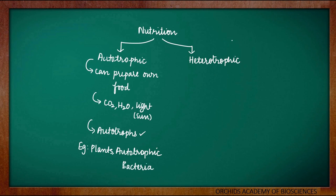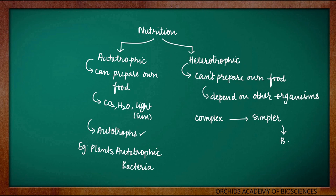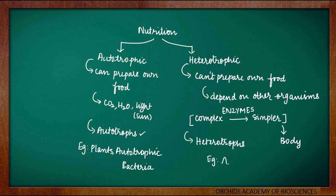What about heterotrophic mode of nutrition? It is completely opposite to autotrophic nutrition. In heterotrophic mode of nutrition, the organisms cannot prepare their own food. They depend on other organisms — like other autotrophs or other heterotrophs — for their food. They take in some complex food which is then later broken down into simpler forms, and this conversion of complex substances into simpler forms is done by certain enzymes. We will be discussing about various enzymes in the chapter later. Examples of heterotrophs include animals, most of the bacteria, and fungus.